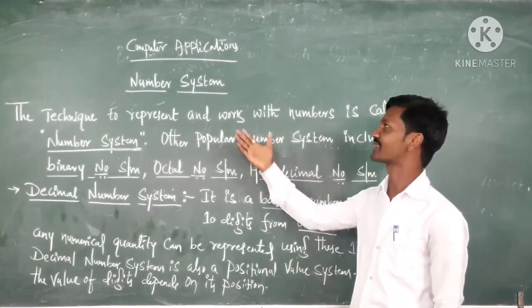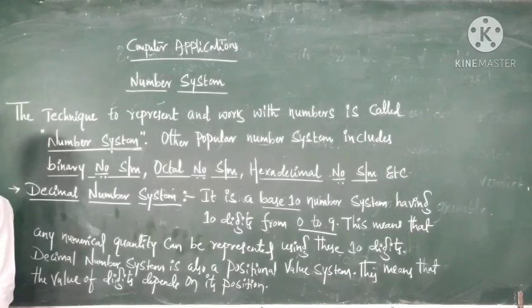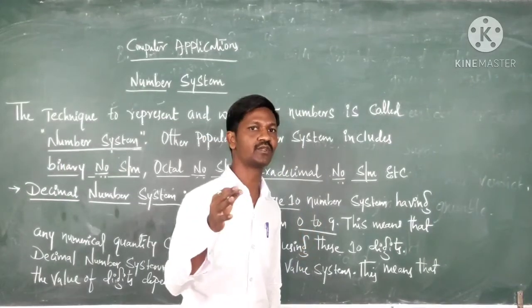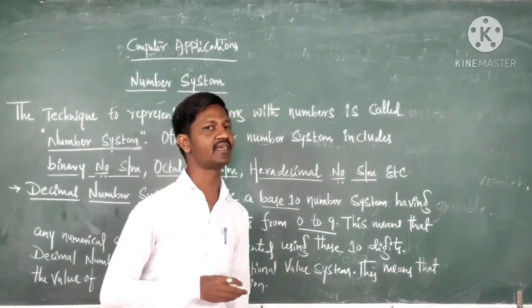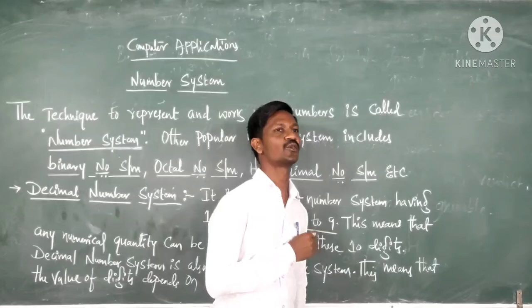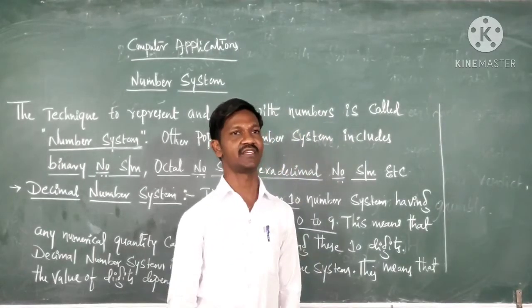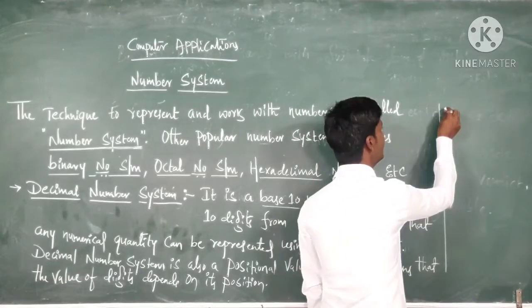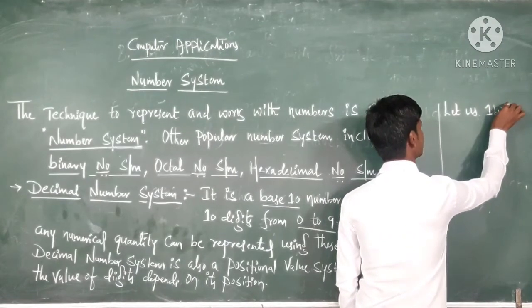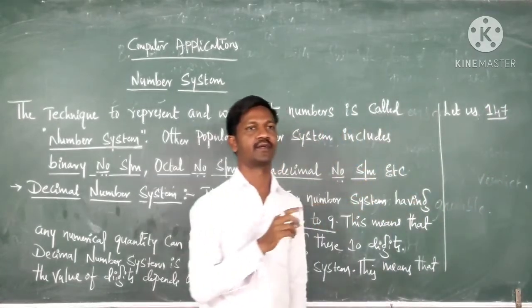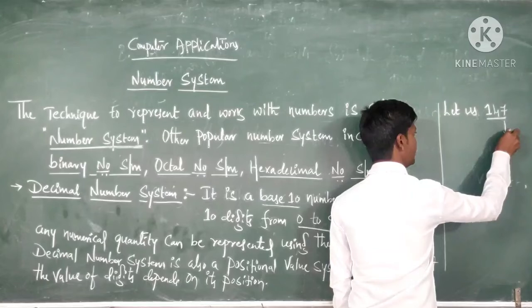In that concept, it is number system. First, we should know the position of the number. So what is the exact meaning of position? I will consider one example. Let us consider 1, 4, 7. This is the number. We should find out the position. Position is nothing but the digit's value.